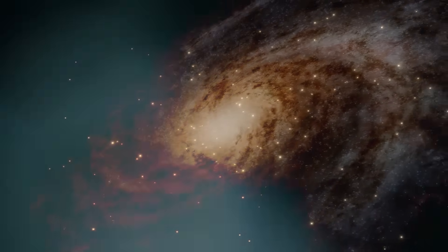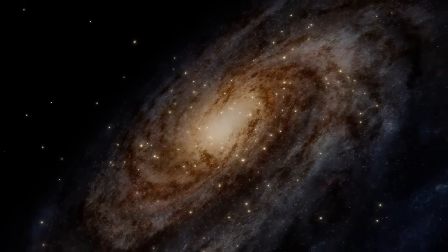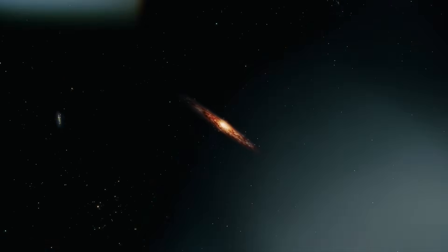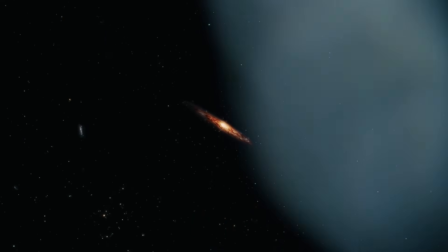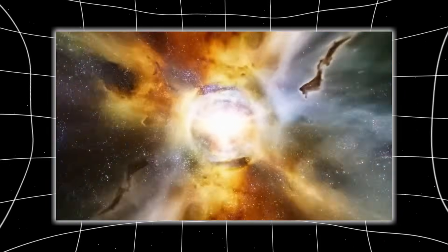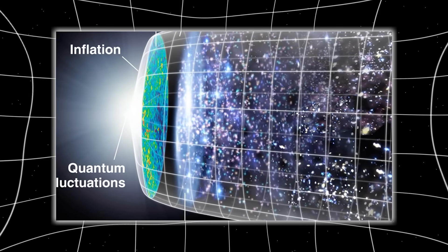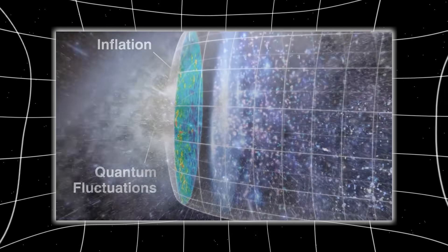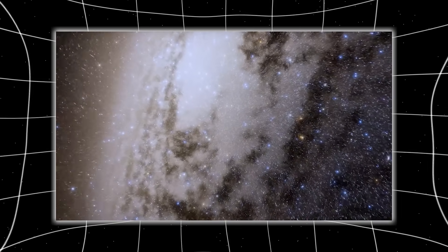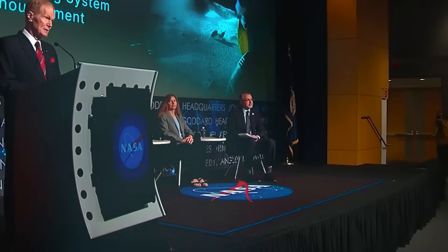But Webb isn't seeing galaxies that just cross the horizon. It's seeing galaxies that were never supposed to be there at all, at distances that suggest a faster-than-expected acceleration of cosmic structures, or that the geometry of space itself might be bending in ways that our equations can't model. You're not just seeing something old, you're seeing something impossible.